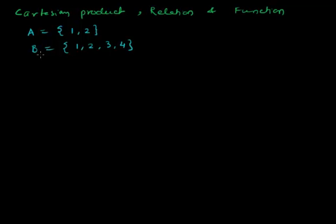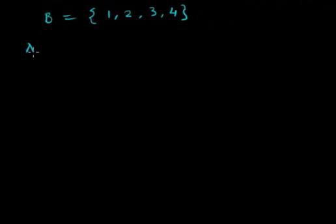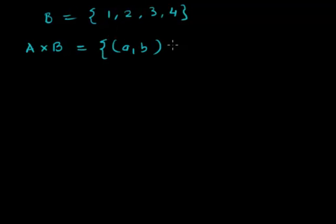Let's learn the difference between Cartesian product, relation, and function. The Cartesian product of A and B, where A is given as {1, 2} and B is given as {1, 2, 3, 4}, is the set of all ordered pairs (a, b) where a belongs to A and b belongs to B.